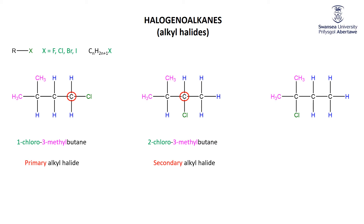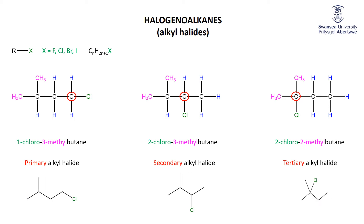For the last example, name it before I start. Again it's a butane — 1, 2, 3, 4 — with no ambiguity about numbering. Both the methyl and the chlorine are on the second carbon, so this is 2-chloro-2-methylbutane, a tertiary alkyl halide because that carbon is bonded to three other carbons. Skeletal structures make this very clear: the chlorine bonded to a carbon going to one other = primary; to two others = secondary; to three others = tertiary.